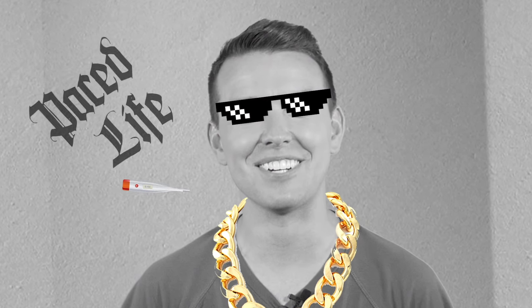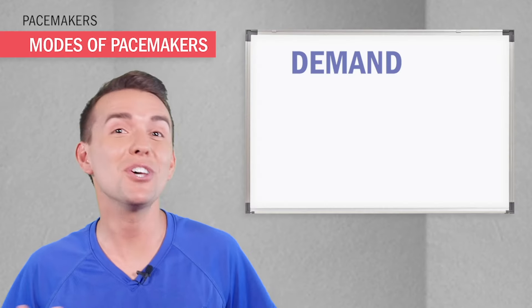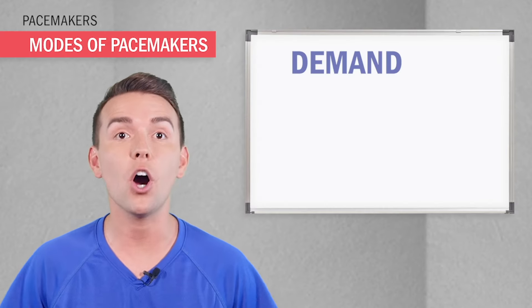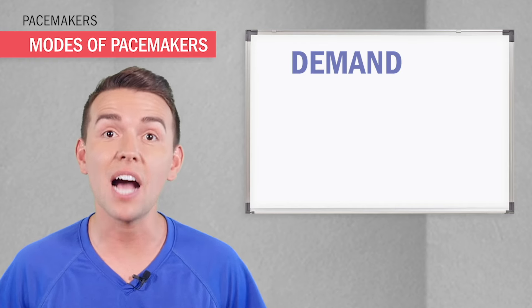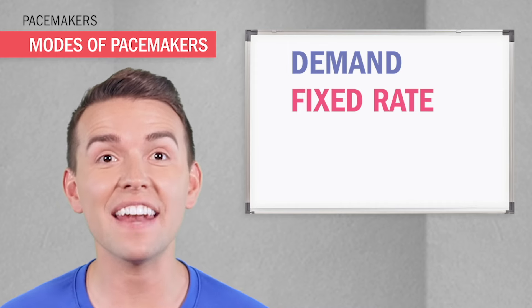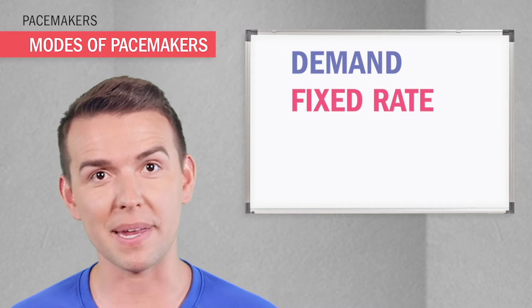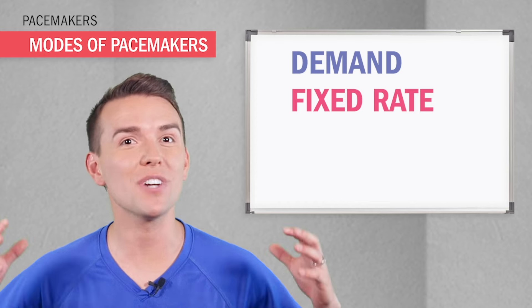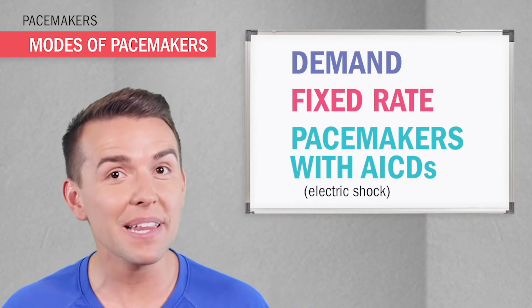There are certain special features that can trick out the pacemaker — welcome to 'Pimp My Pacemaker.' Demand mode only kicks in when the heart rate drops, so it's used on demand, most commonly for symptomatic bradycardia. Fixed rate fires at a constant fixed rate, like 70 beats per minute. The fanciest upgrade is the ICD — implanted cardioverter defibrillator — which can deliver an electric shock.